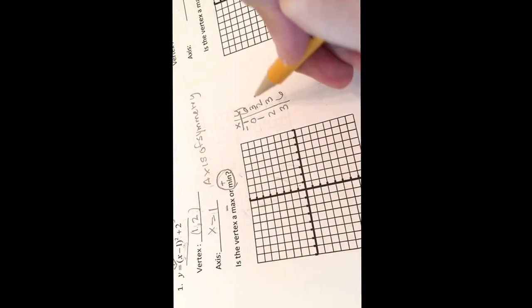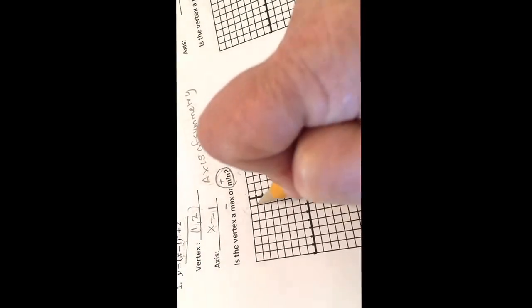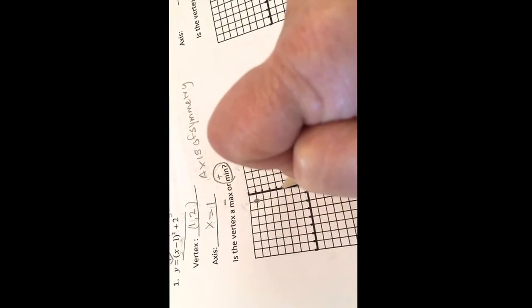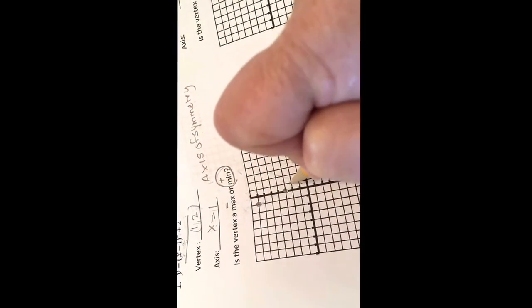We're now going to plot these points onto this graph. Okay, so negative 1, 6 will put us right here. 0, 3 will put us here. 1, 2 will put this here.